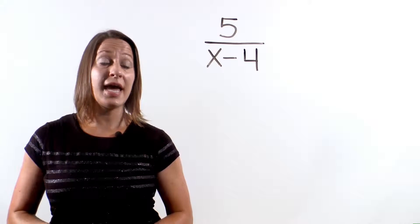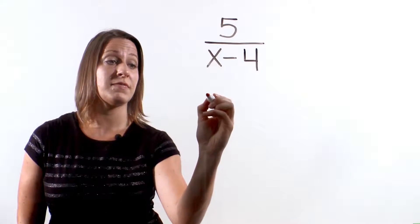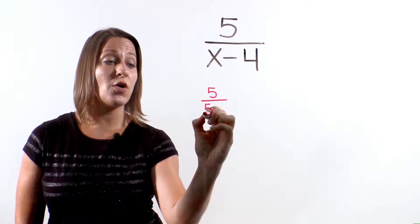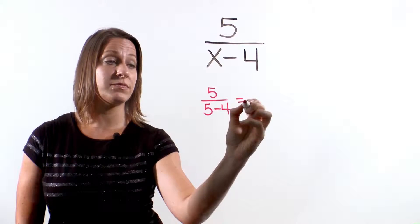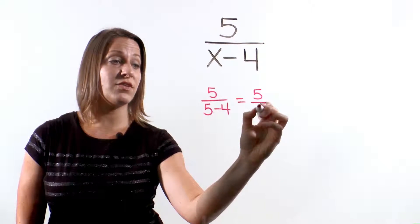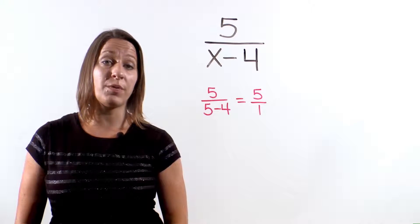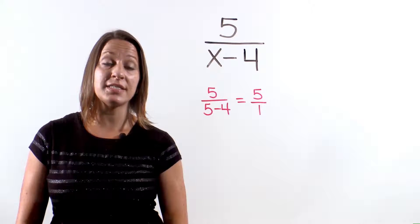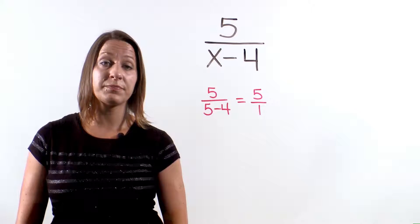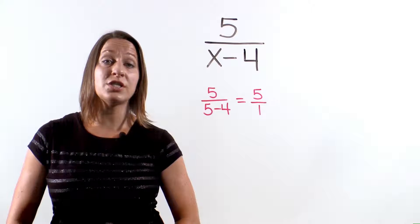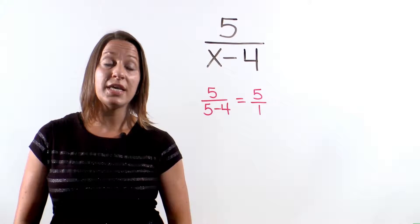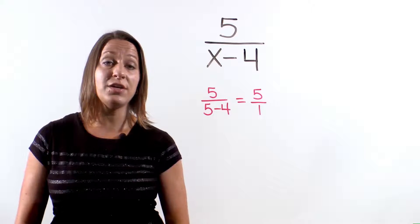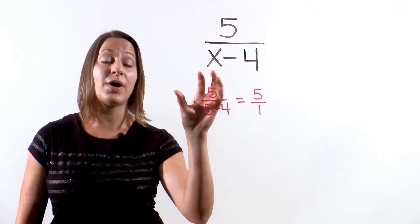For example, x could be 5. If x was 5, this problem would have a value of 5 over 5 minus 4, which is 5 over 1, which is the whole number 5. So we could say that 5 is a possible number in the domain of x. We could go through this long process of finding all possible answers, or we could find the value of x that would make this entire problem not true.